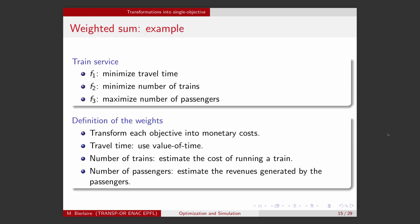One way to define the weights is to use them to transform every objective into a common unit so that they are comparable. Let's take an example. I want to optimize a train service in transportation. One of my objectives is to minimize the travel time. My second objective is to minimize the number of trains because it costs a lot of money.